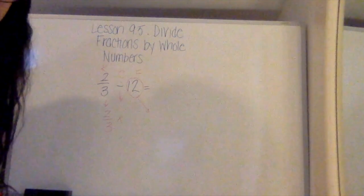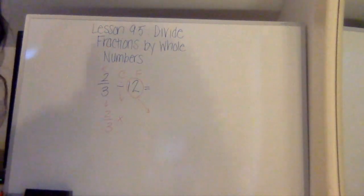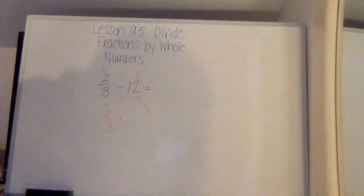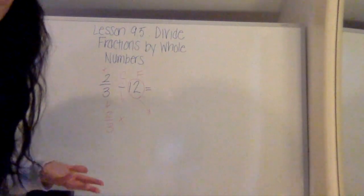When we're dividing by a whole number, that of course then begs the problem. What on earth are we going to do if we don't have a denominator? How are we going to do the flip if we don't have a denominator?